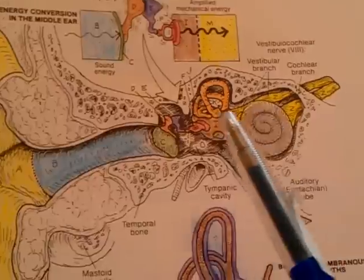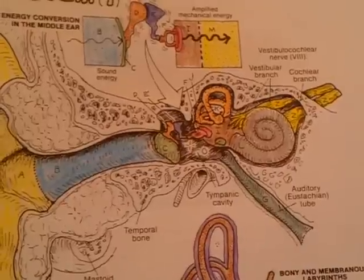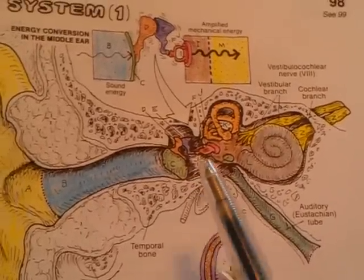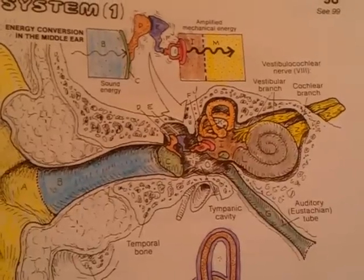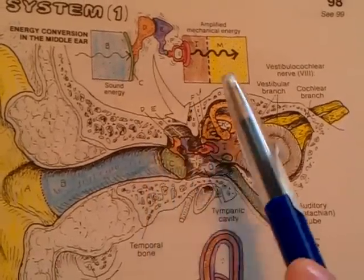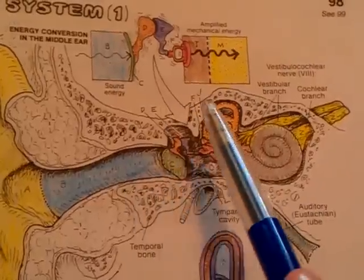Then we have the anterior wall, which separates the tympanic cavity from the carotid canal. The roof is called the tegmental wall. It separates the cavity from the middle cranial fossa. It is seen as tegmen tympani.